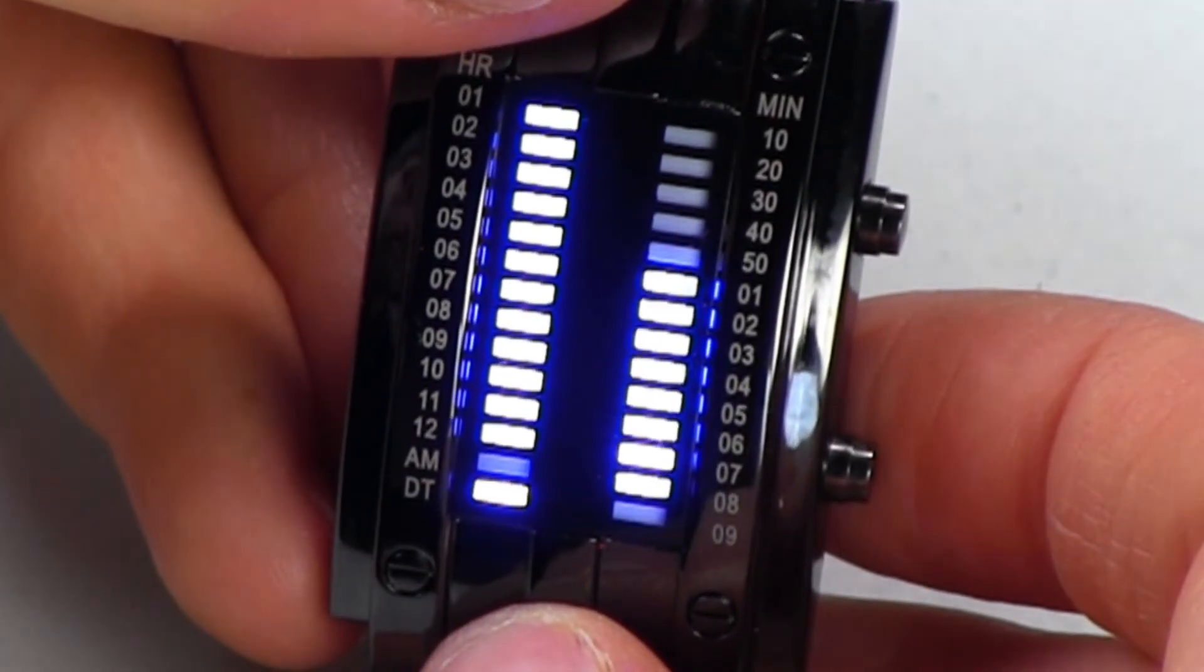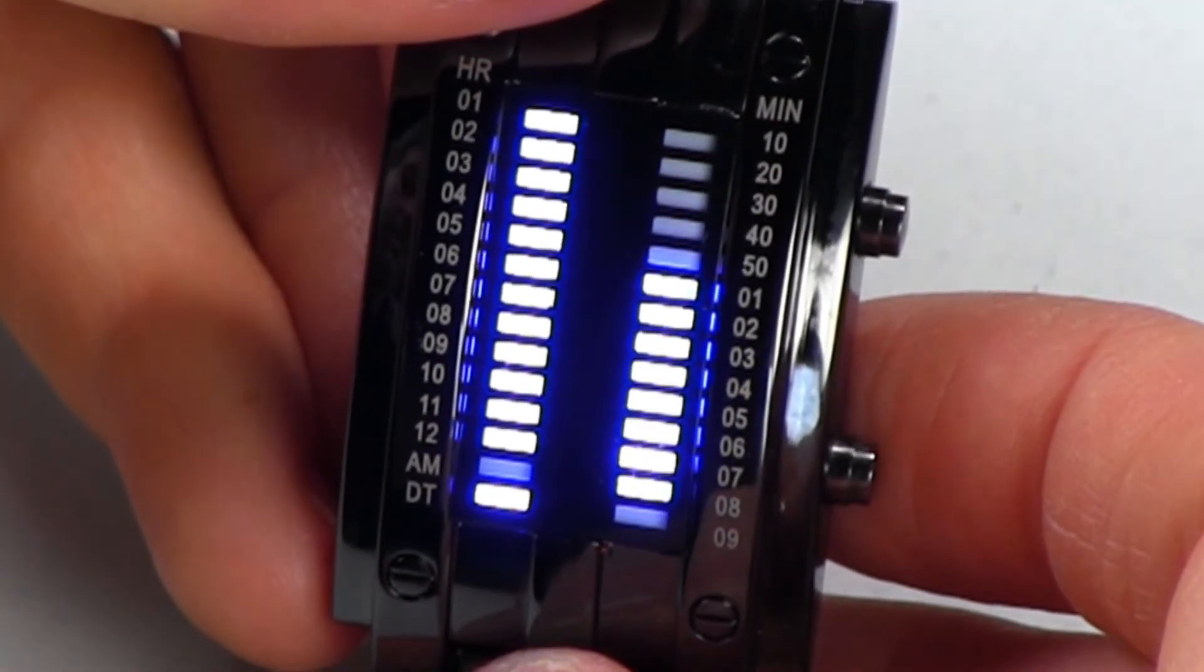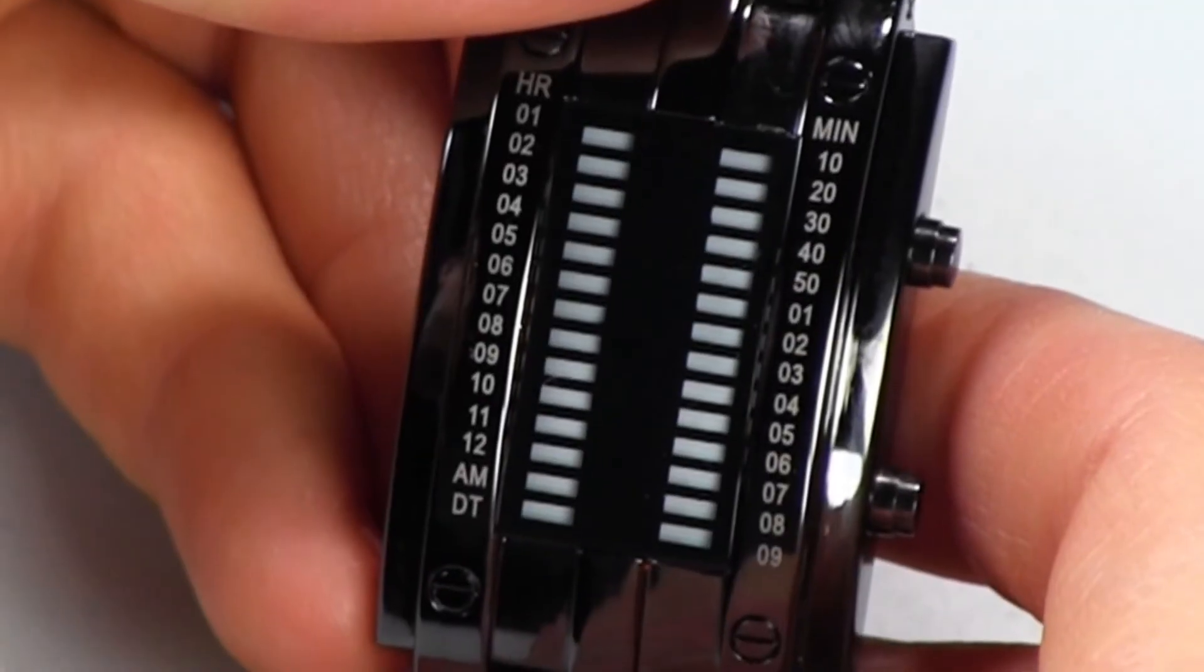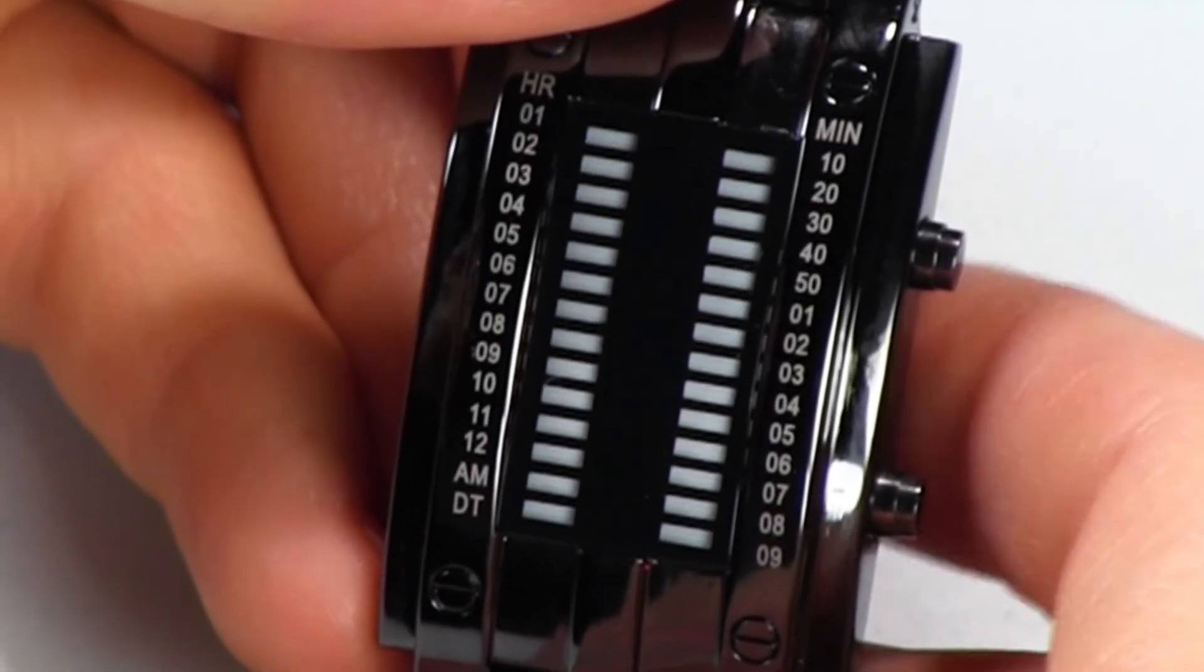And now it's set. And now we're just going to wait for the blinking to stop and the lights to turn off. And now it's set. So we successfully changed the time and the date to what we wanted.